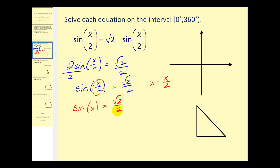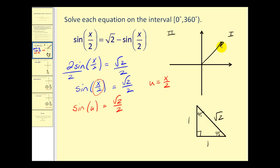A ratio of square root two over two should remind you of a 45-45-90 reference triangle. The sine of 45 degrees equals one over square root two, which rationalizes to square root two over two. So we have a reference angle of 45 degrees. Since sine is positive in the first and second quadrant, we sketch a reference angle of 45 degrees in both the first and second quadrant.